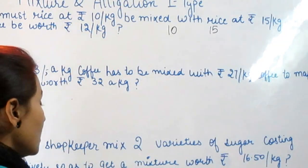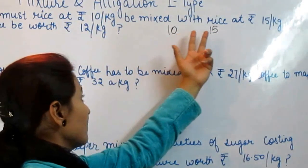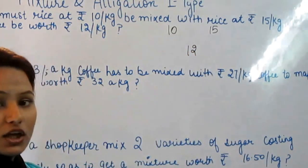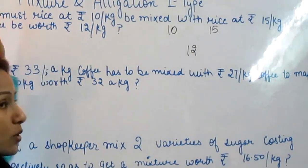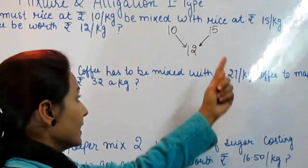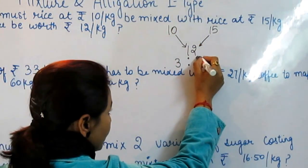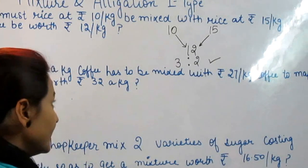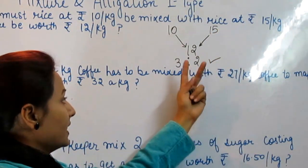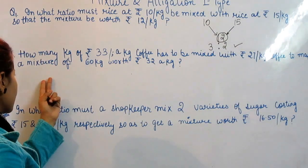कुछ चावल 10 रुपए किलो है, कुछ चावल 15 रुपए प्रति किलो है। मैं इन दोनों चावल की वेराइटीज में से कितना-कितना लूं जो मुझे 12 रुपए प्रति किलो पड़े। Alligation की ratio निकालते वक्त हम diagonal निकालते हैं। 10 रुपए किलो वाली चावल 3 की ratio में और 15 रुपए किलो वाली चावल 2 की ratio में लेने पर मिश्रण 12 रुपए का पड़ेगा।